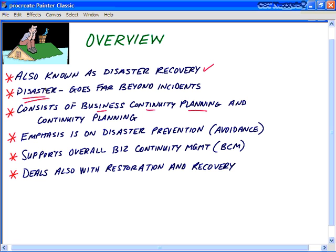In a nutshell, IT service continuity management is an overall process responsible for controlling and managing all of the risks and vulnerabilities that could seriously impact IT services. At the very least, we want to make sure that your IT service provider is going to provide at least the minimum level of agreed service levels — the lowest common denominator. Anything less than that really falls into the category of a disaster.